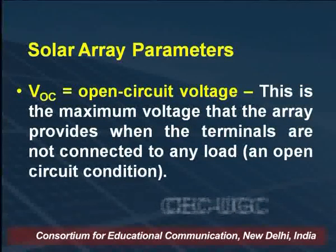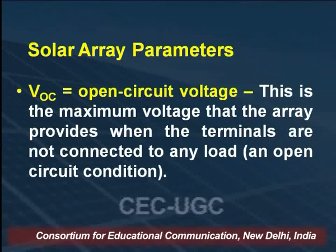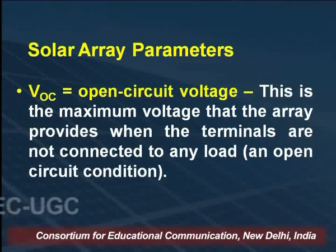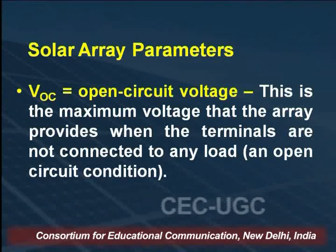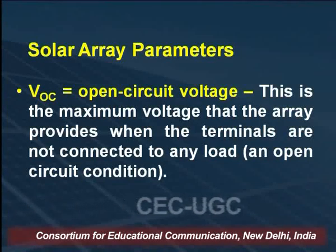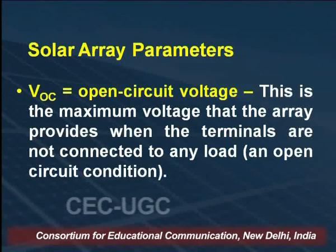Now, what are the solar array parameters important in the solar cell experiment? Number 1 is VOC, the open circuit voltage. This is the maximum voltage the array provides when the terminals are not connected to any load — when the circuit is open and resistance is maximum. This value is much higher than V maximum, which relates to normal operation fixed by the load. It depends upon the number of photovoltaic panels connected in series.